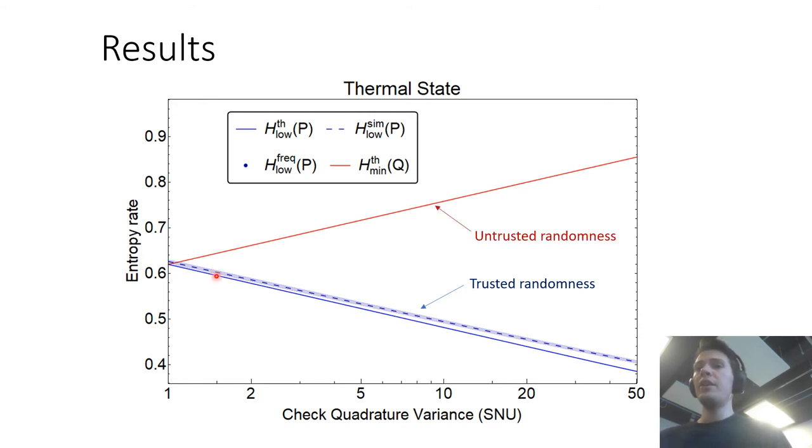Now the dashed line represents simulation of the estimation of the bound for the conditional min entropy taking into account finite data size because our samples for estimating this bound are finite so they will only reach the blue line here, the solid line, for in the asymptotic limit.